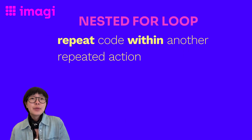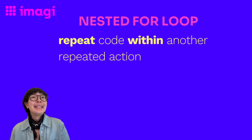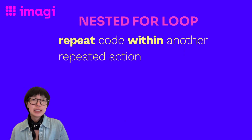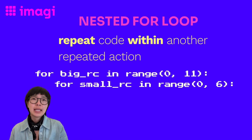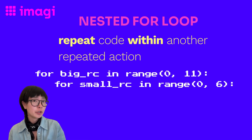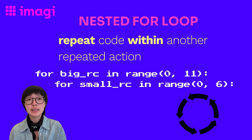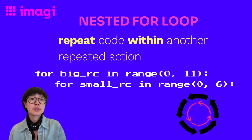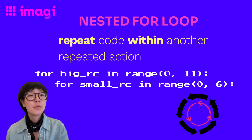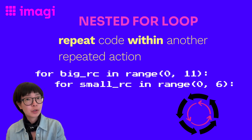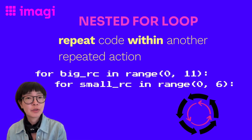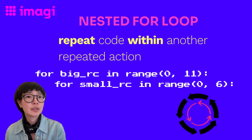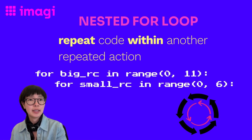And when things get really wild, we've got nested for loops. It's almost like a double-decker roller coaster, and simply means a loop inside another loop. Imagine a small roller coaster running loops inside a larger roller coaster. We use nested for loops when we need to perform repeated actions within another repeated action.